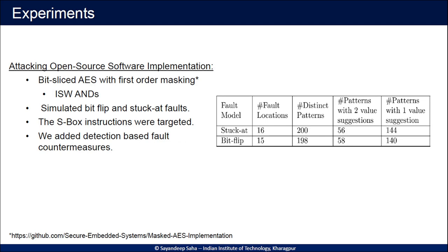We also tested an open-source software implementation of AES with first-order masking where AND gates were implemented in ISW manner. We simulated bit-flip and stuck-at faults targeting an AES implementation. For the S-box, we required 16 different fault locations for constructing the templates. Some template entries may suggest multiple intermediate values, but overall the attack complexity remains quite reasonable and the key can be recovered within minutes.